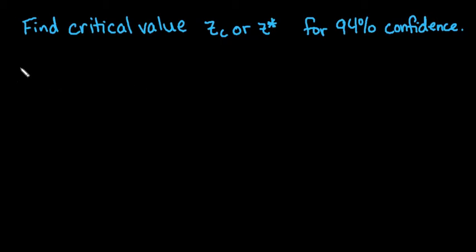Let me redraw that line because that was pretty bad. All right, so what we have is the normal curve. Our critical values are the values that end our confidence interval. We want to be 94% confident, which means that we want to capture 94% of the samples in our curve.